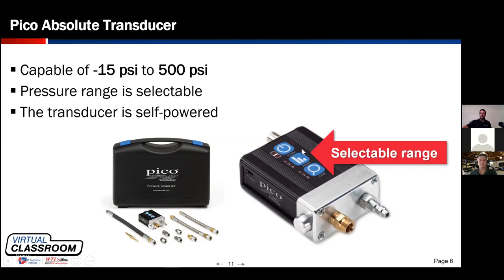What's great about the WPS 500 is it's almost like three transducers built into one. It has a selectable range button capable of anywhere from minus 15 psi — negative pressure or vacuum — all the way up to positive 500 psi, which covers all the pressure ranges needed to analyze any pressure associated with the engine. It also has a mini USB jack that allows you to power up its internal lithium-ion battery, which has an excellent service life.